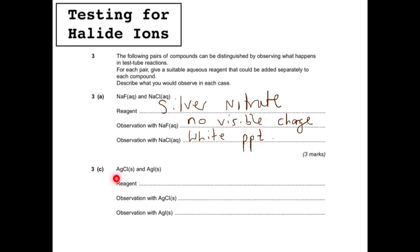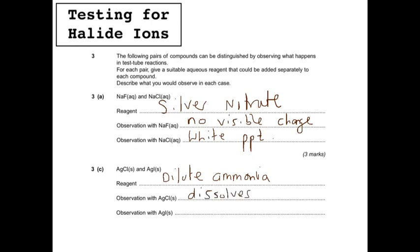For distinguishing silver chloride from silver iodide: one will dissolve in dilute ammonia and one won't. Silver iodide won't dissolve in either dilute or concentrated ammonia, whereas silver chloride dissolves in both — so the reagent can be dilute or concentrated ammonia, but you must specify which. The observation with silver chloride is that it dissolves; the observation with silver iodide is no visible change, as it will not dissolve.